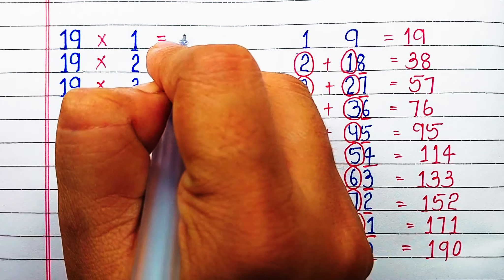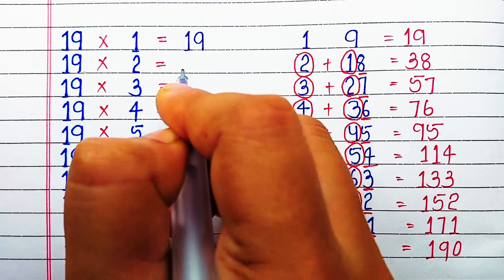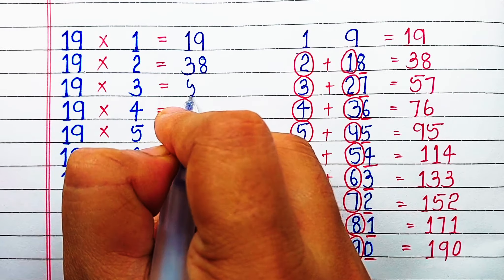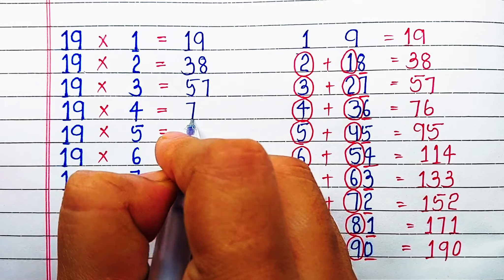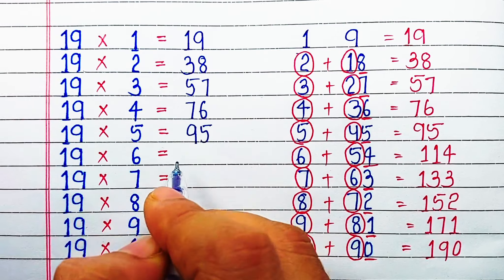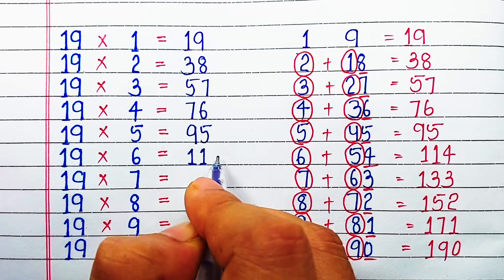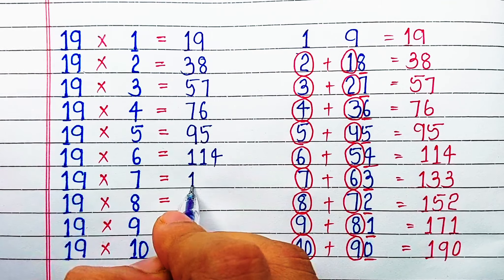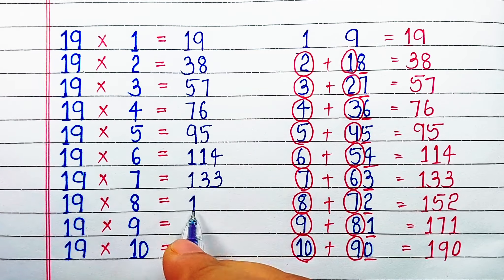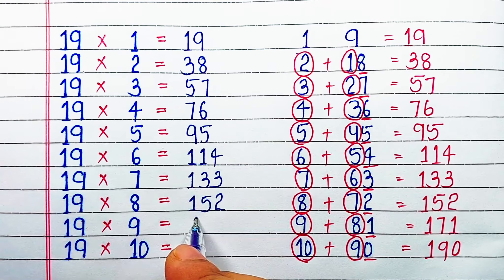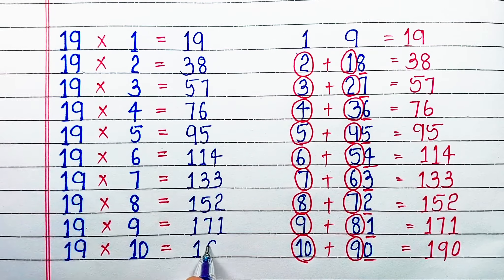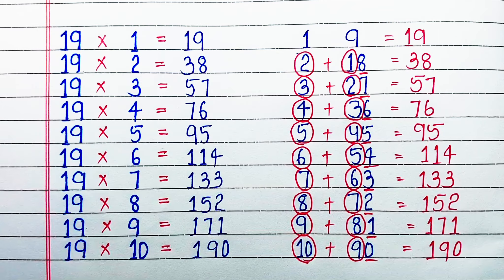With this we have got the table of 19. So let's start writing: 19×1=19, 19×2=38, 19×3=57, 19×4=76, 19×5=95, 19×6=114, 19×7=133, 19×8=152, 19×9=171, 19×10=190.